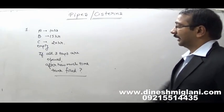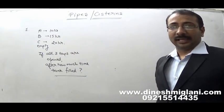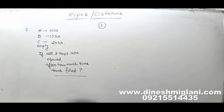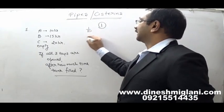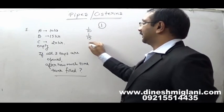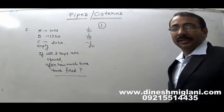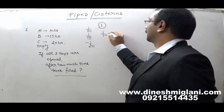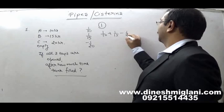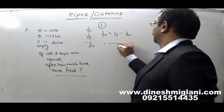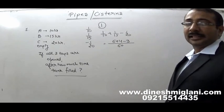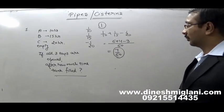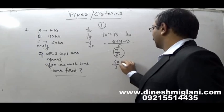One thing to take care of: C is emptying, so we apply a negative sign. The first approach: assume total capacity of the tank equals 1. A's 1-hour work is 1/10, B fills 1/15 in 1 hour, and C empties 1/20. If they work together: 1/10 + 1/15 − 1/20. LCM is 60, so that becomes 6 + 4 − 3 = 7. They fill 7/60 of the tank in 1 hour, so the total tank is filled in 60/7 hours. That becomes your answer.